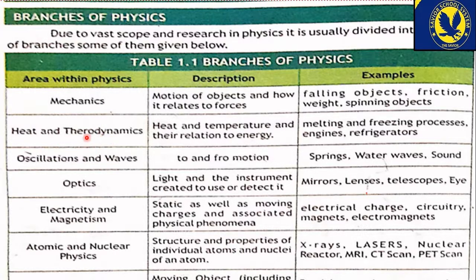دوسرا area ہے heat and thermodynamics — heat and temperature and their relation to energy۔ کون سا material کتنا heat کرنے پر کس طرح react کرتا ہے۔ Thermodynamics سے مراد heat energy کو kinetic energy میں change کرنا اور اس سے motion دینا ہے۔ Melting and freezing processes، engines and refrigerators — freezers، refrigerators، air conditioners، اور steam engines، turbines — یہ سب thermodynamics میں آتا ہے۔